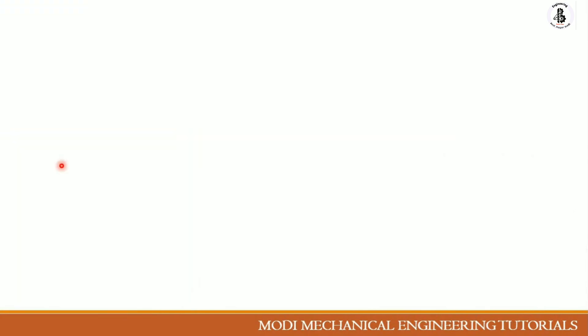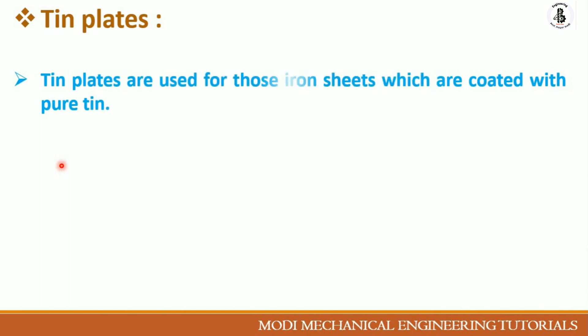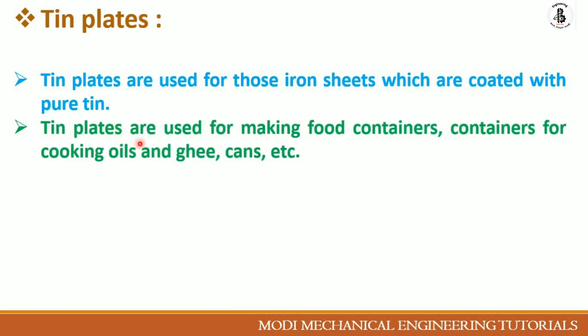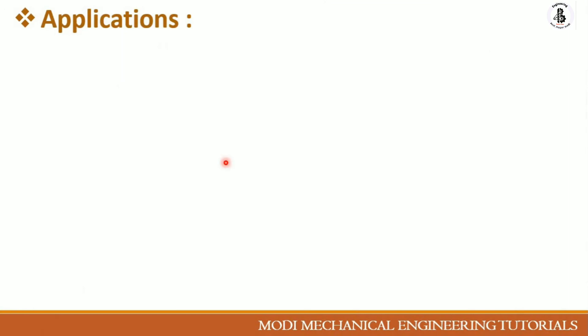Tin plates are iron sheets coated with pure tin. They are used for making food containers, containers for cooking oils, ghee cans, and so on.